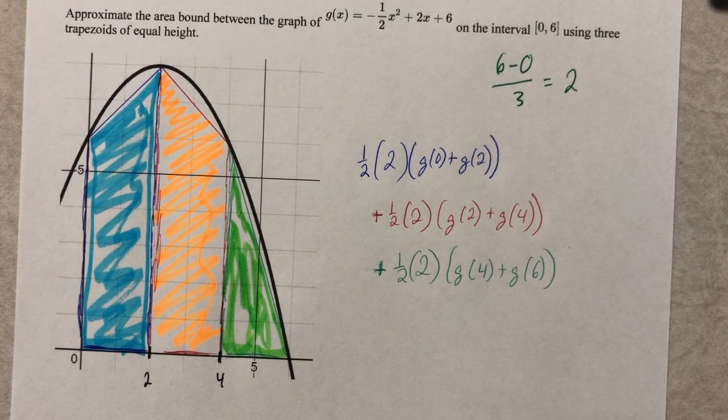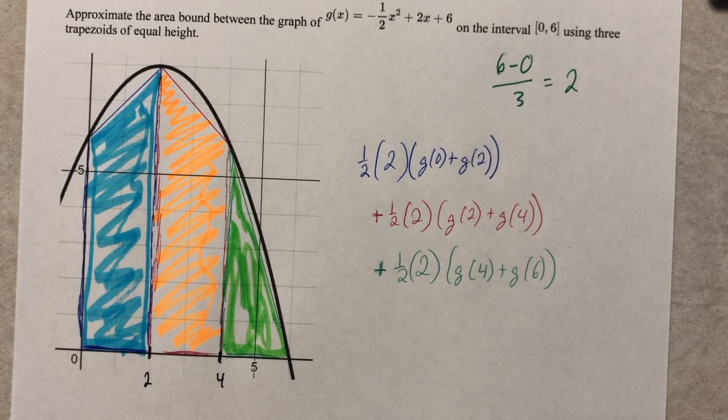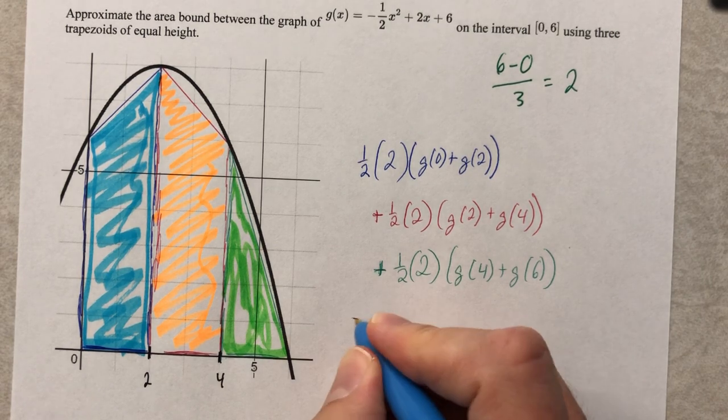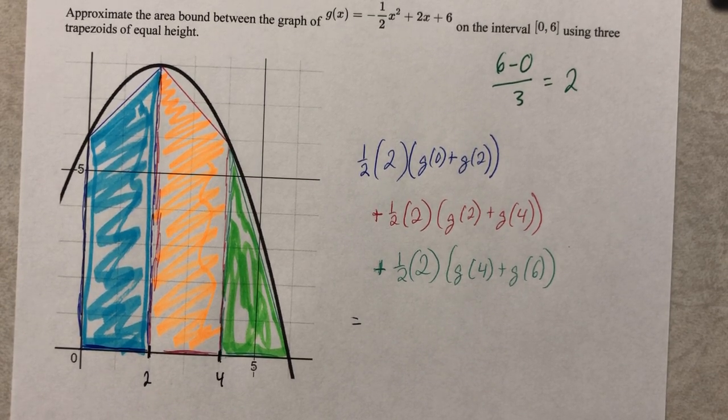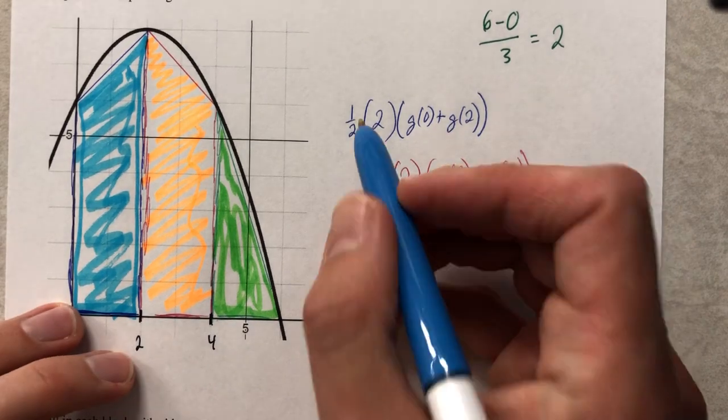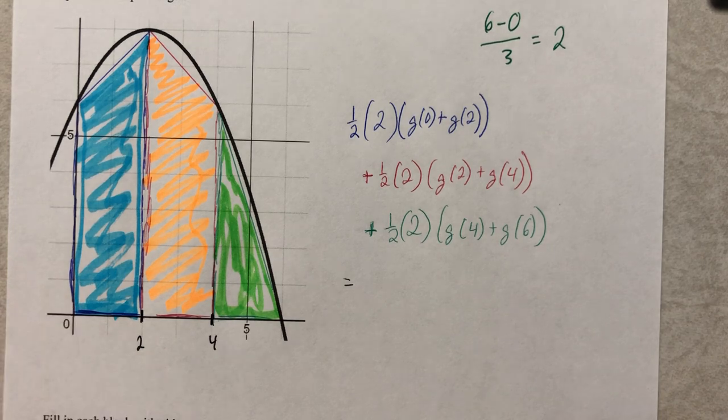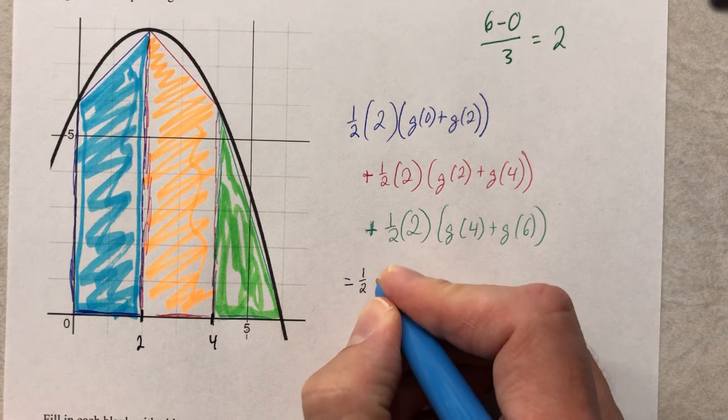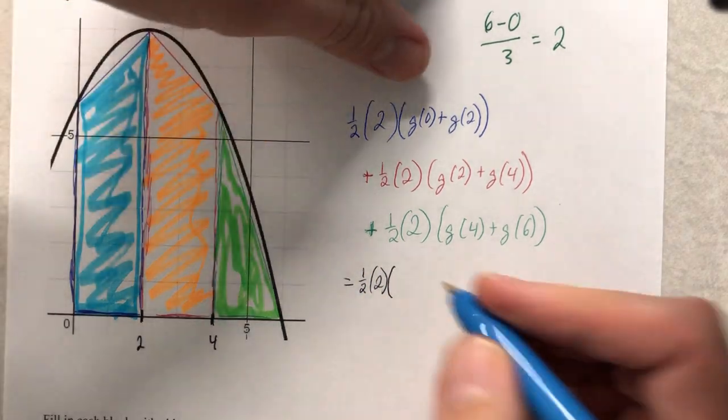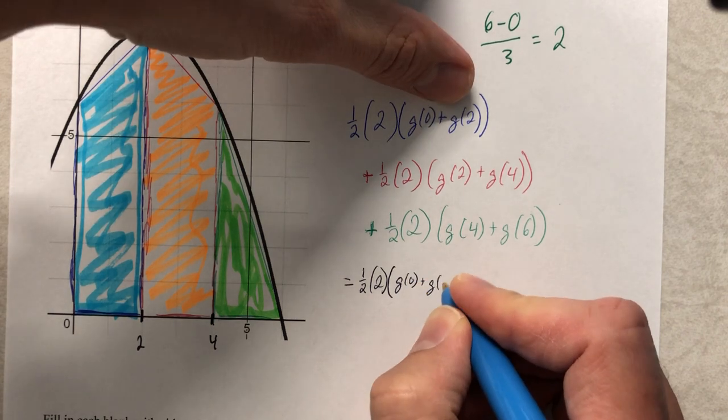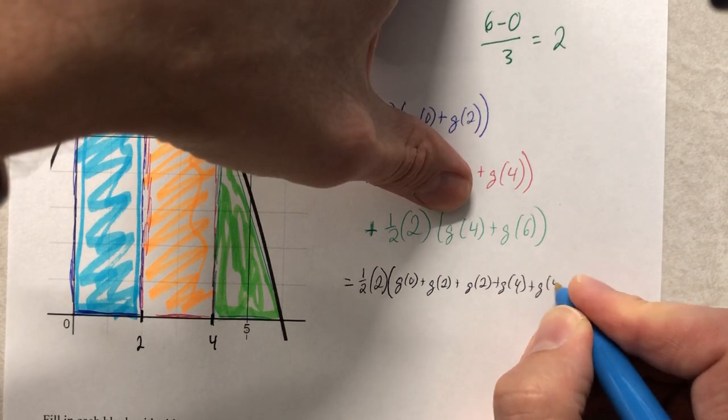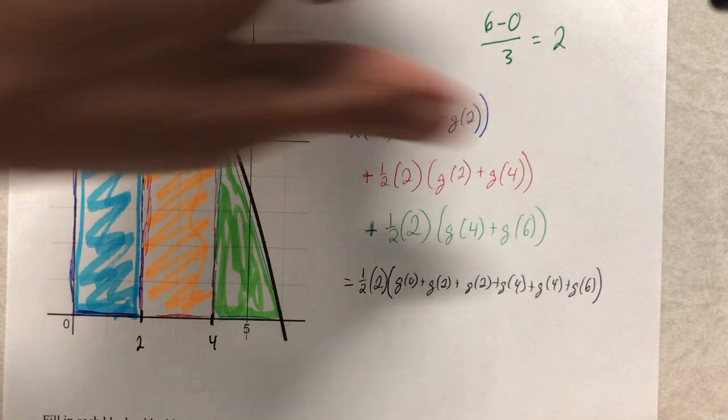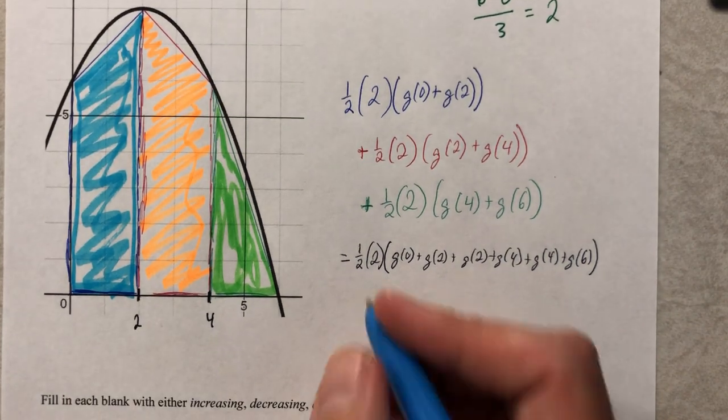There is somewhat of a shortcut for this, and I'd love to skip some steps, but I don't want to confuse anyone. So here's what's really happening. I can factor a one half times two out of all of this. Now, I know one half times two is one, but if it wasn't one, I could still do it. So I'm going to say one half times two, and that would give me G of zero plus G of two plus G of two plus G of four plus G of four plus G of six.